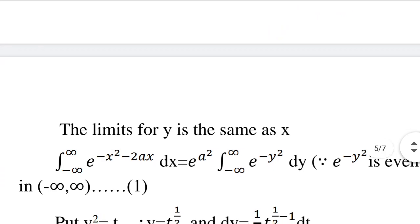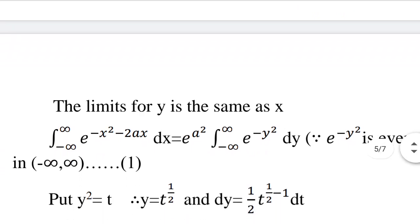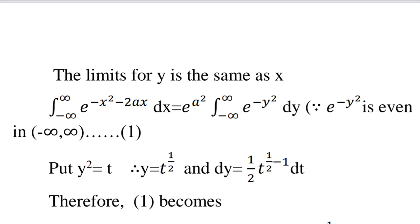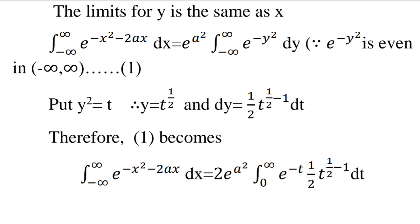Since e raised to minus y squared is an even function, the integral from minus infinity to infinity equals twice the integral from 0 to infinity of e raised to minus y squared dy. We substitute y squared equal to t, giving y equals t raised to 1 by 2 and dy equals 1 by 2 times t raised to 1 by 2 minus 1 dt.